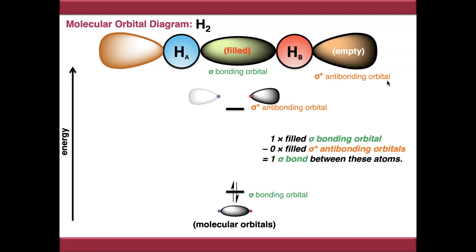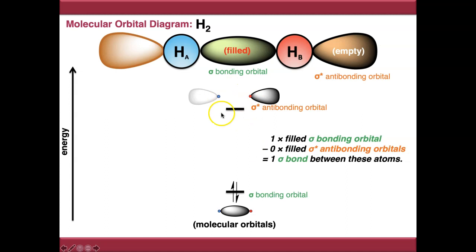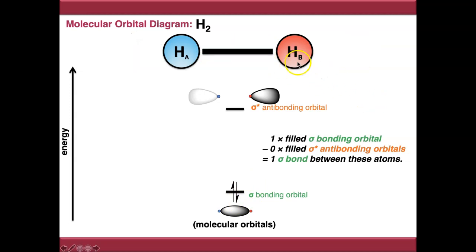We can do a little arithmetic here. For every filled antibonding orbital, it cancels out the corresponding bonding orbital. We have one filled sigma bonding orbital and no filled sigma star antibonding orbitals, so there is one sigma bond between these atoms. If we filled the sigma star antibonding orbital, it would cancel the bond out and the bond between the two hydrogens would break. On a skeletal structure, this is simply drawn as a single bond between the two hydrogens.